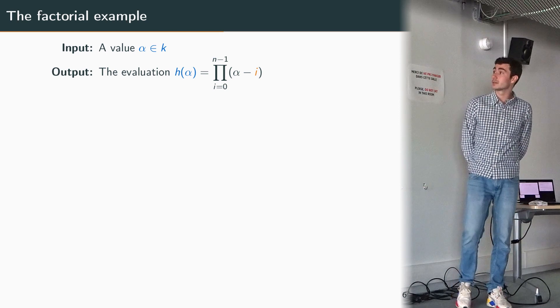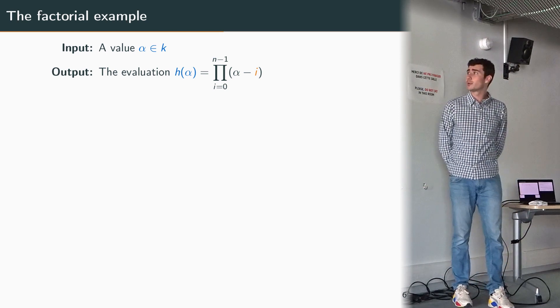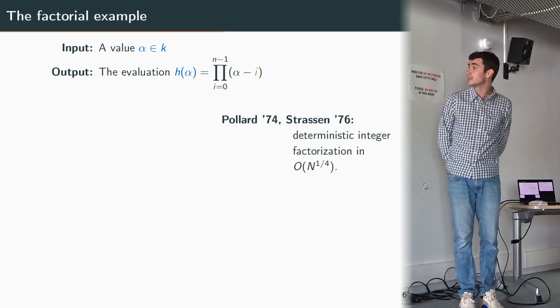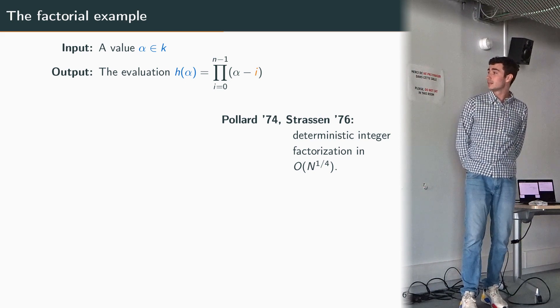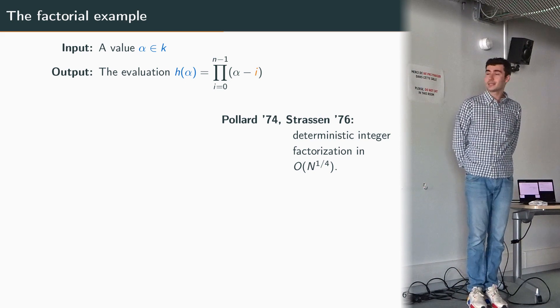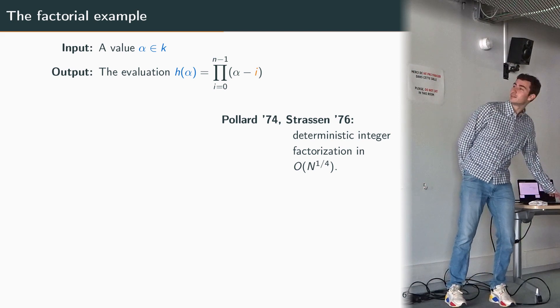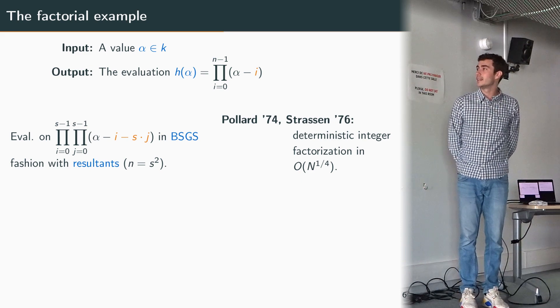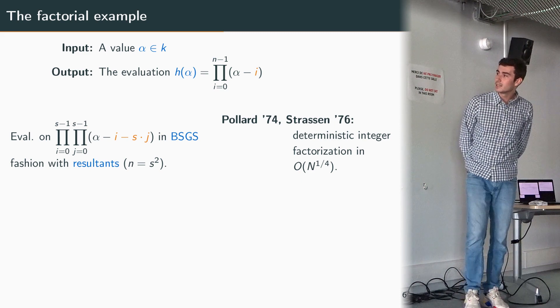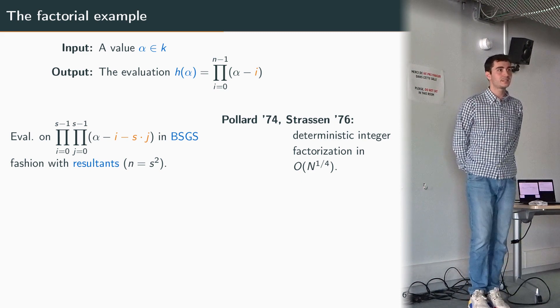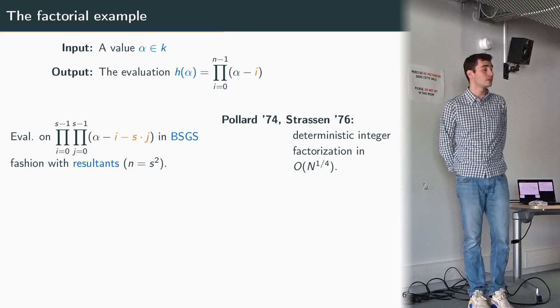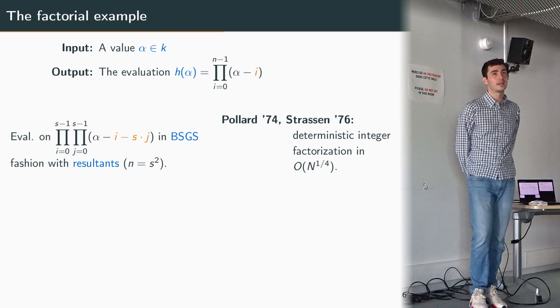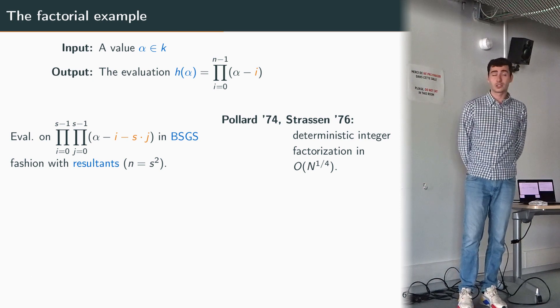I think a good way of getting the intuition of this is to look at examples. A couple of examples that we have from the literature. The first one is the factorial example where we take the polynomial whose roots are the n first integers. In fact this problem has been studied by Strassen in '76 and he built from the work of Pollard to make the deterministic integer factorization algorithm. For that he gave a way to compute this more efficiently than the naive method. The idea is to use this kind of decomposition of our polynomial h into this baby step giant step fashion.